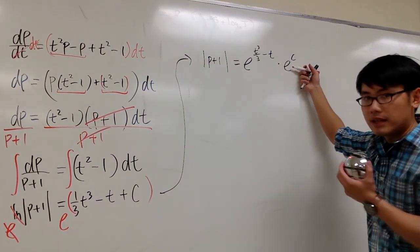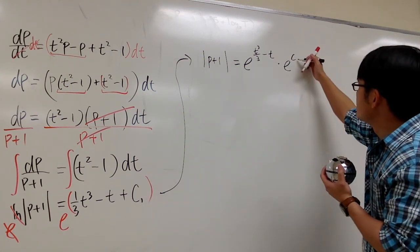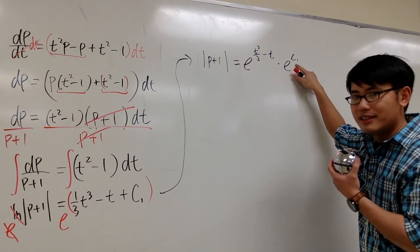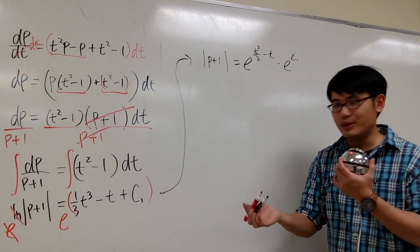Because here we have e as being a constant, and perhaps I should label this as c1, and this is still c1. e is a constant, c1 is also a constant. A constant raised to a constant power. I can call that another constant. So, I can call that c2.